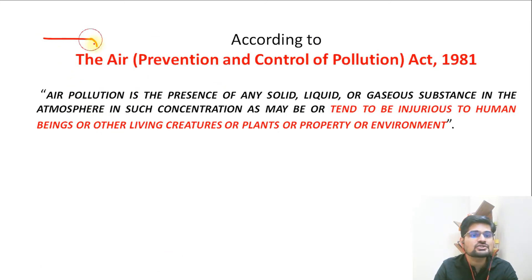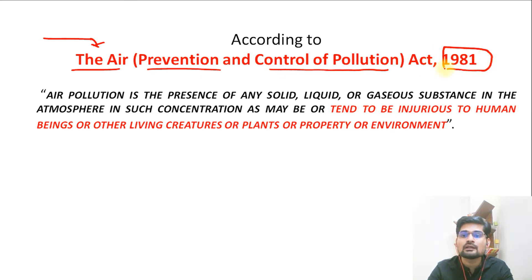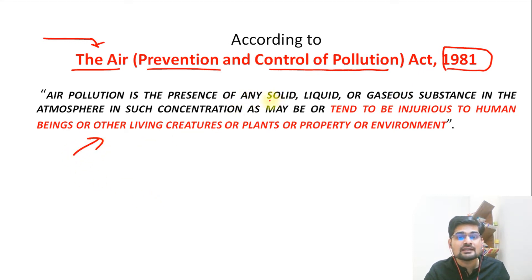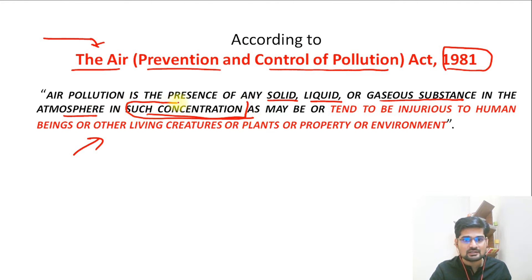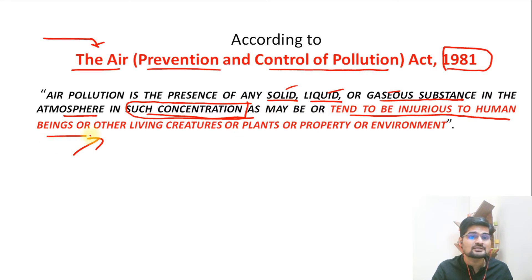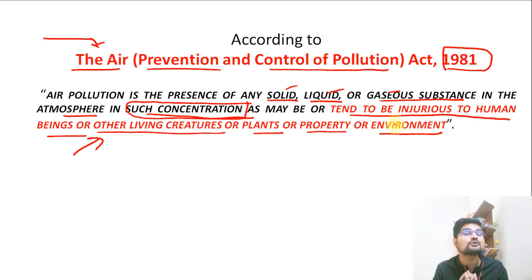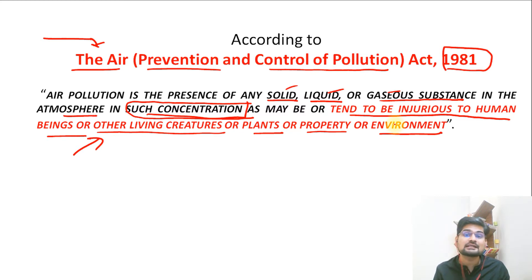If we want to look into the definition - the dictionary definition or the government definition - the Air Prevention and Control of Pollution Act 1981 defines air pollution specifically as: air pollution is the presence of any solid, liquid or gaseous substance in the atmosphere in such a concentration that may or tend to be injurious to human beings or other living creatures or plants or property or environment. The concentration is the key point here. These are the things associated with pollution.